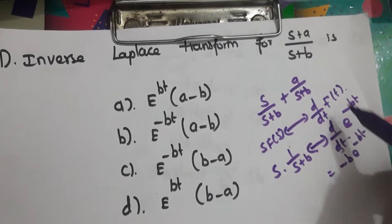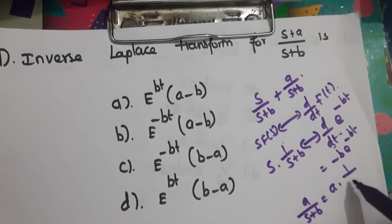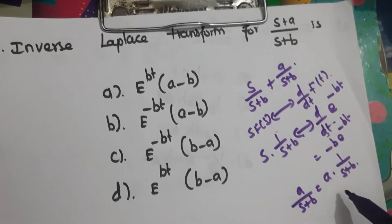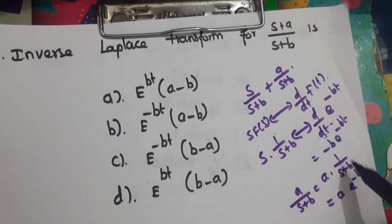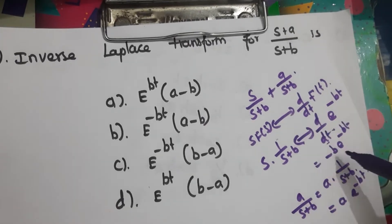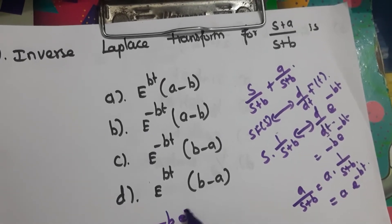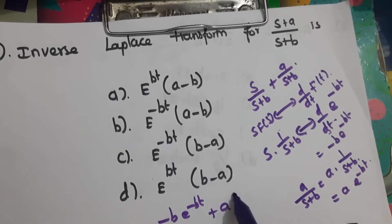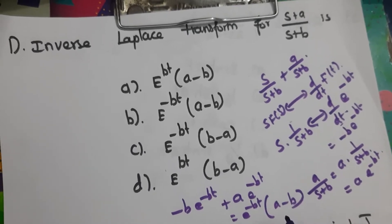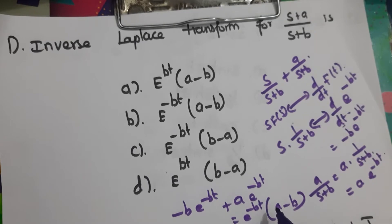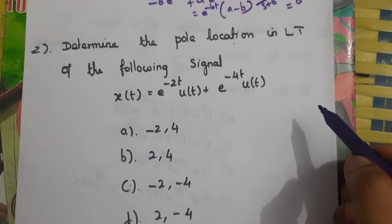For the second term, a/(s+b) equals a times 1/(s+b), so the inverse Laplace transform is a·e^(-bt). Combining both terms: -b·e^(-bt) + a·e^(-bt). Taking e^(-bt) outside gives (a - b), so the answer is e^(-bt)·(a - b). The answer is B.